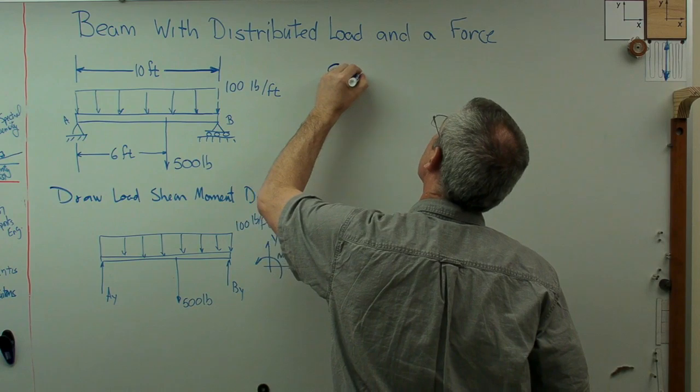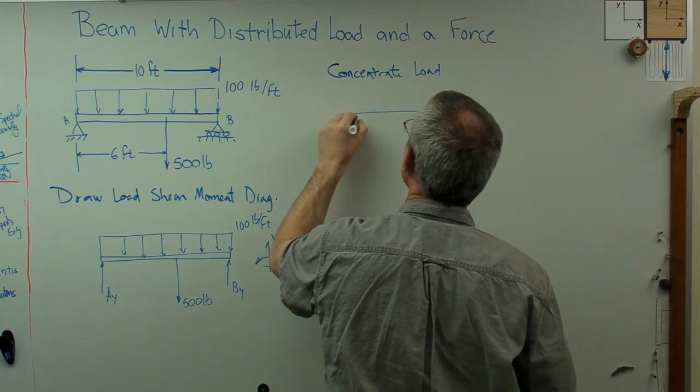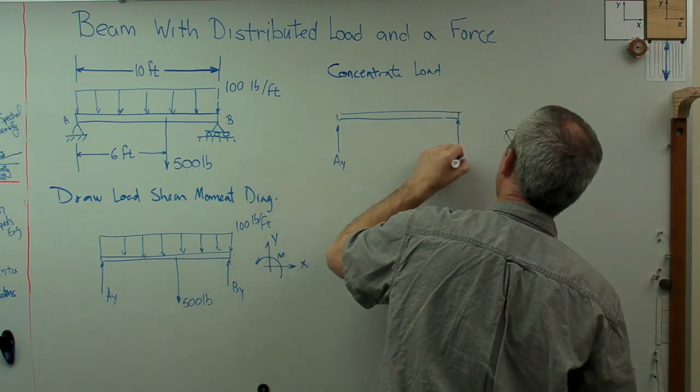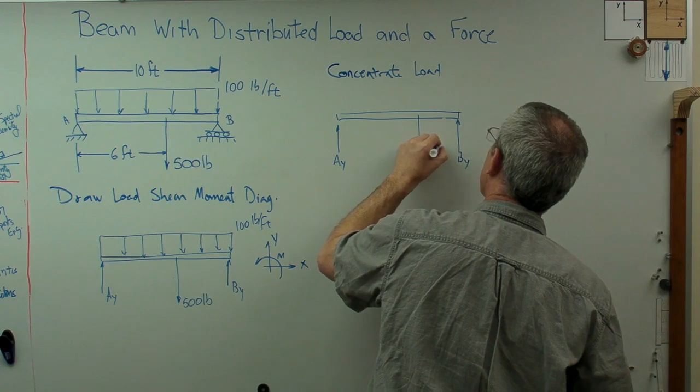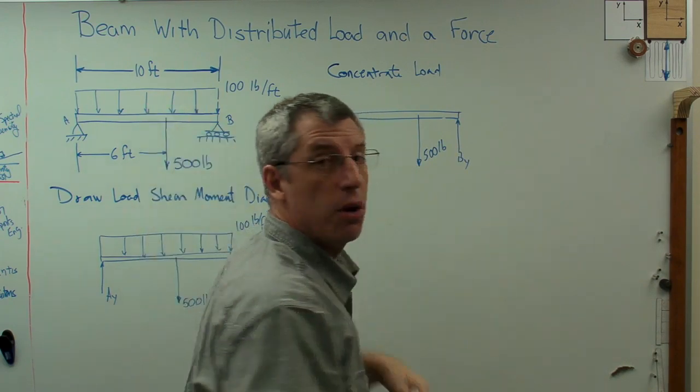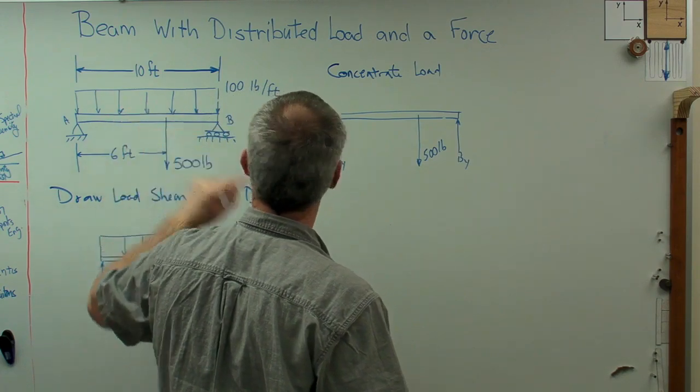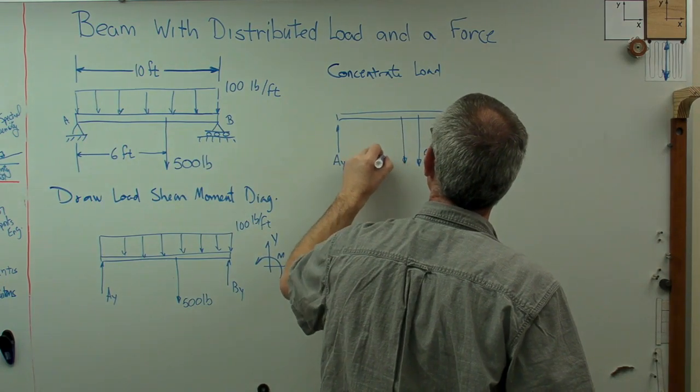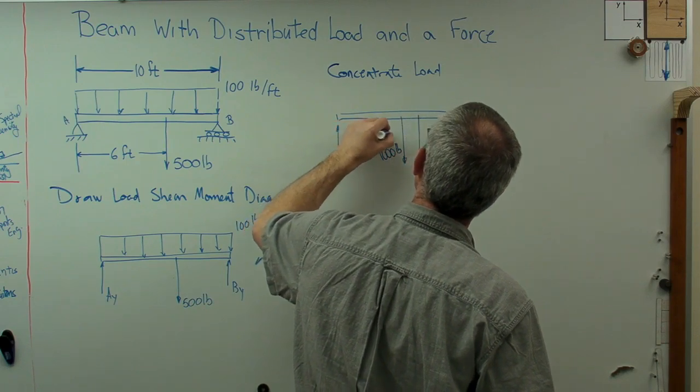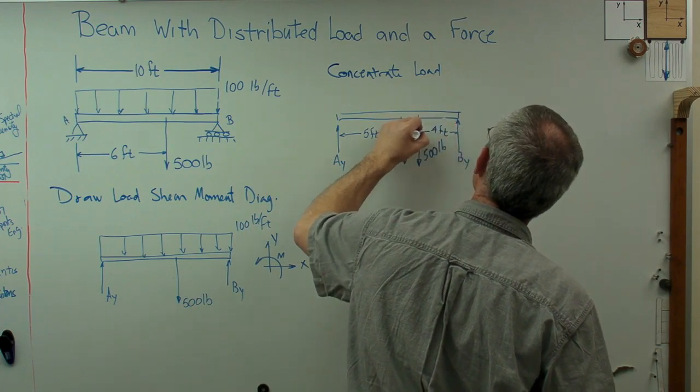Let's concentrate the load in order to get the reaction forces. So I'm going to draw this same beam here quickly, and there's A_Y, B_Y, and our off-center 500-pound load there. What we don't have right yet is the concentrated load representing that. Well, it's 100 pounds per foot times 10 feet, so it's going to be 1,000 pounds, and since this is symmetric across the beam, it's going to be in the center. So I've got 1,000 pounds there, with this being 5 feet and that being 4 feet.